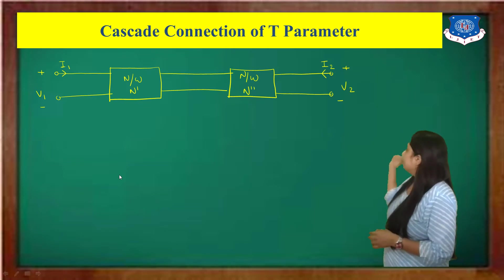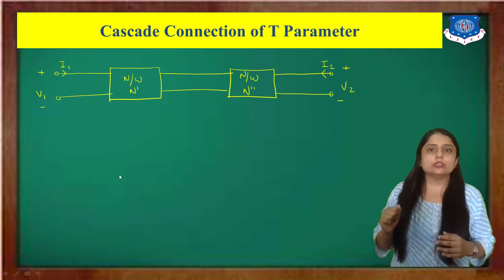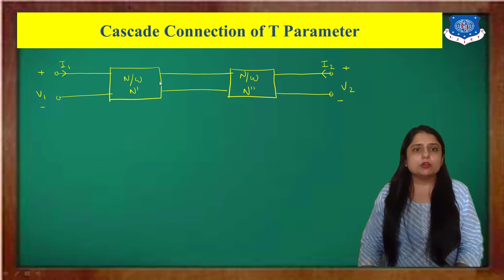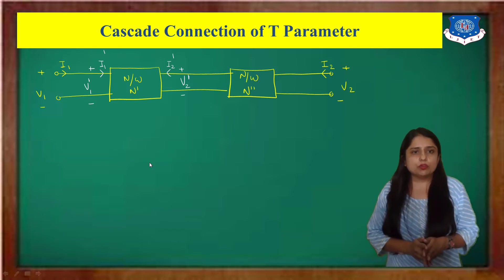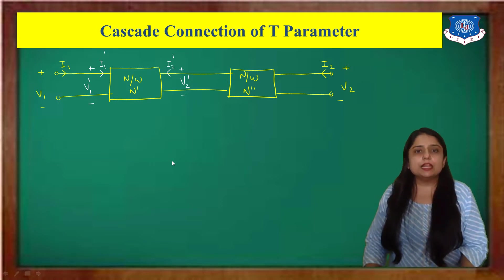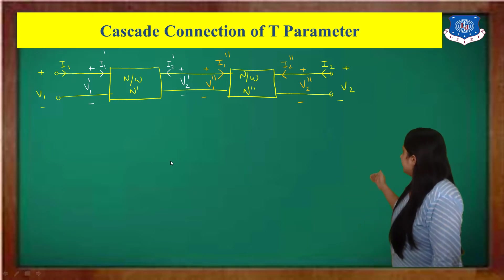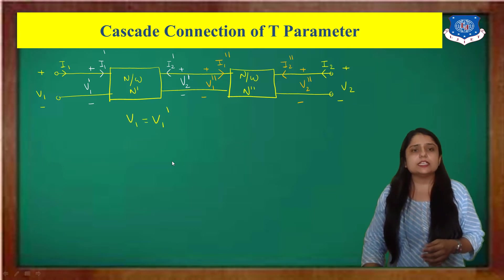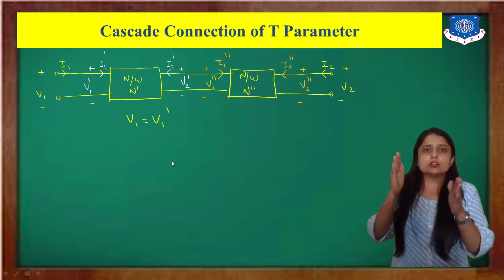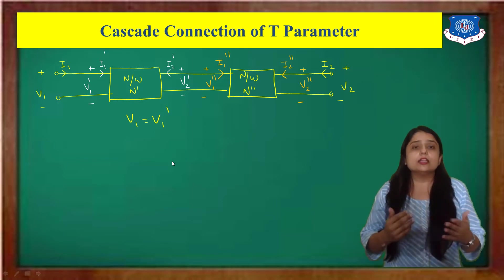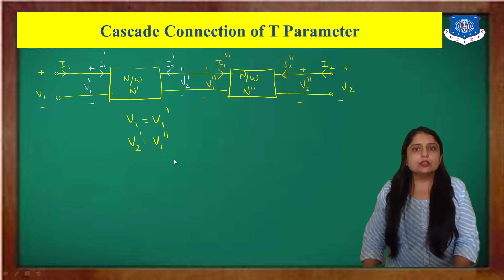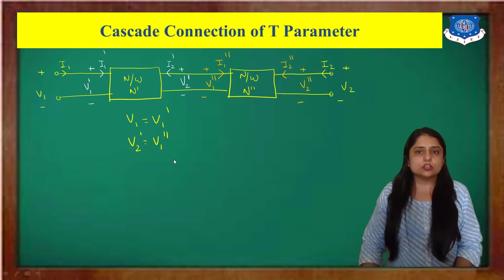We know that I2 always flows toward the network. For network N-dash, the input voltage is V1-dash, input current is I1-dash, output voltage is V2-dash, and output current is I2-dash. Similarly for network N-double-dash. By looking at this network, we can see that V1-dash equals V1-double-dash because those two voltages are connected in parallel. Similarly, V2-dash and V1-double-dash are also connected in parallel, so those voltages are the same.